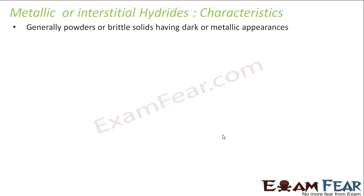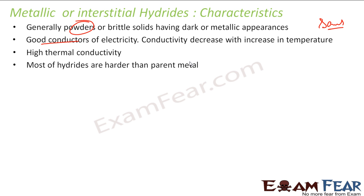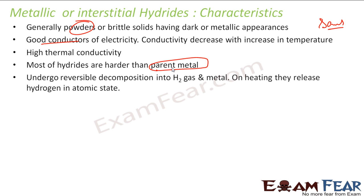Some characteristics of metallic or interstitial hydrides: they are generally powder or brittle solids with a dark metal appearance — similar to sand in structure. They are good conductors of electricity because the H+ ions are trapped and conduct electricity, but conductivity decreases with increasing temperature as the H+ ions are released. They also have high thermal conductivity, and most of these hydrides are harder than their parent metal.